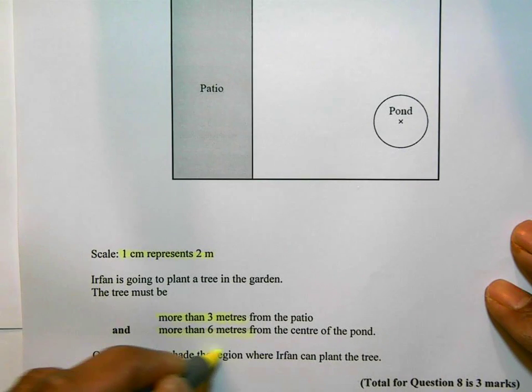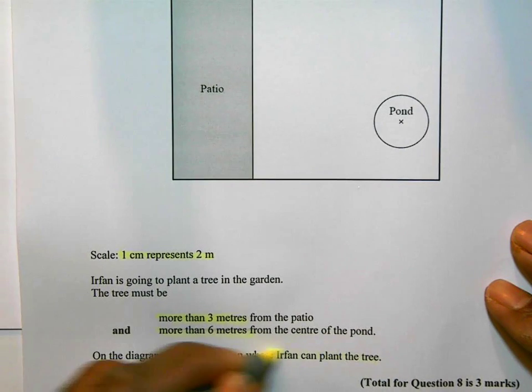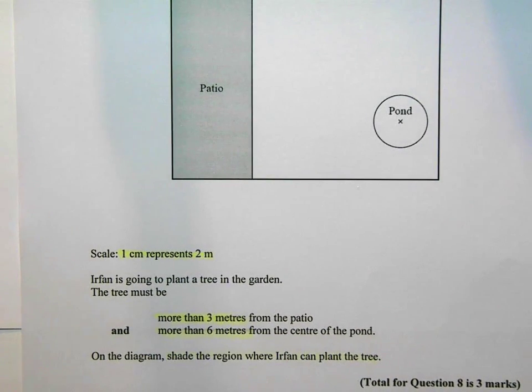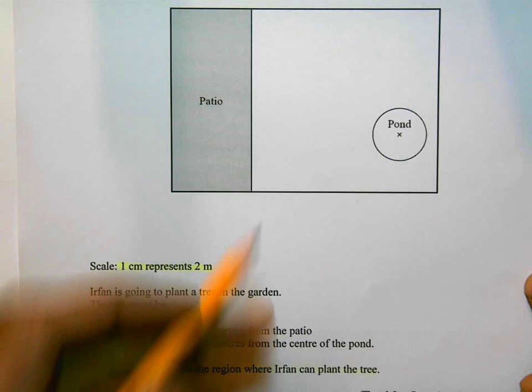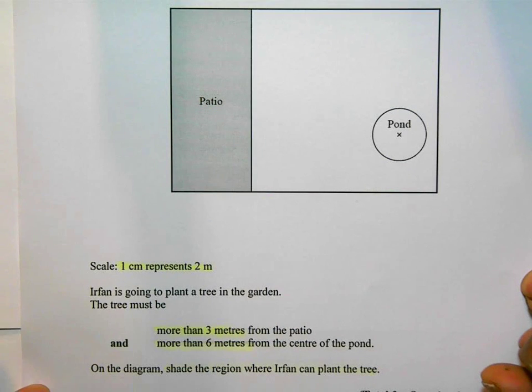On the diagram, shade the region where Irfan can plant the tree. So shade where he can plant the tree. Now, this is a question where I don't have to do any maths - I don't have to do any number work of sorts in terms of working things out. But I need to make sure that the answer is presented on the diagram itself.